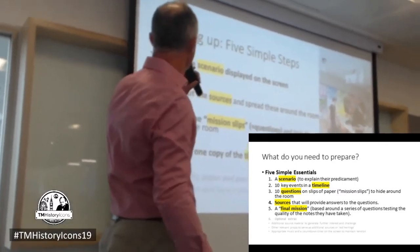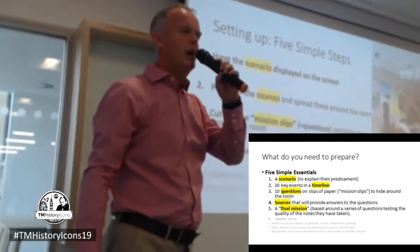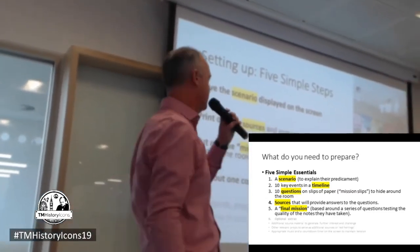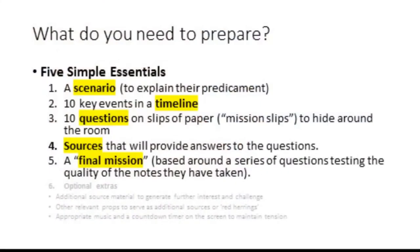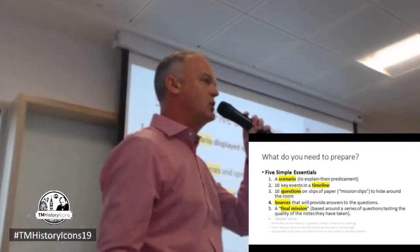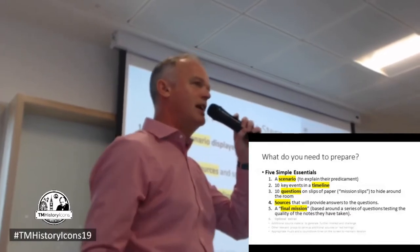Number one, you have a scenario — why are they locked in the room? Number two, a series of sources sprinkled around the room: pictures, primary sources, textbooks, books off your own shelf. Number three, a series of mission slips, which are simply questions based on the sources — questions that they will answer from the sources. And then a timeline — that's all you need. A timeline of ten key events, ten key questions, and the questions can be answered from some sources. That's all you actually need to get it going.